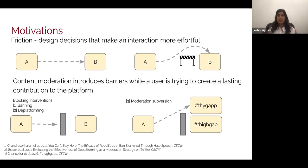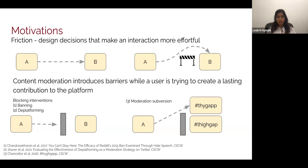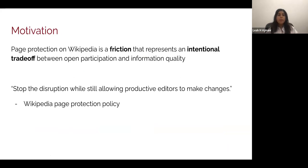If we think about a user pathway from A to B, a friction can be conceptualized as a hurdle — something like requiring an account. It's not blocking the user from doing anything, but it does require more effort on their part. Content moderation introduces barriers to users trying to create a lasting contribution to the platform. Notable interventions include banning and de-platforming, which block a user from getting from point A to point B entirely. Some barriers are ineffective though — for example, hashtag banning on Instagram: communities figured out how to subvert it using lexical variations, so it became more of a friction.